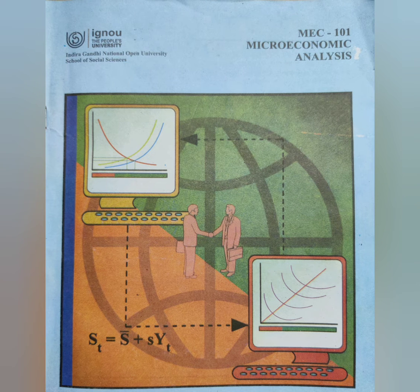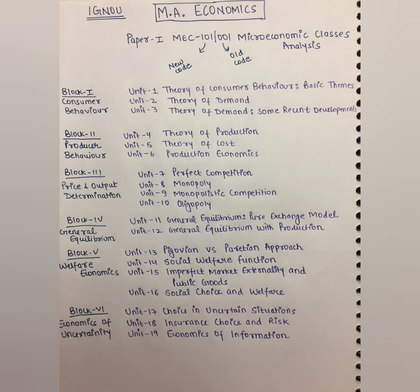Let's discuss the syllabus in detail. In total, we have 8 blocks in this paper. This paper gives us an insight into the microeconomics branch of economics. As we know, microeconomics is the study of behavior of individual economic agents. This course introduces us to optimal decisions taken by different economic agents in different situations.